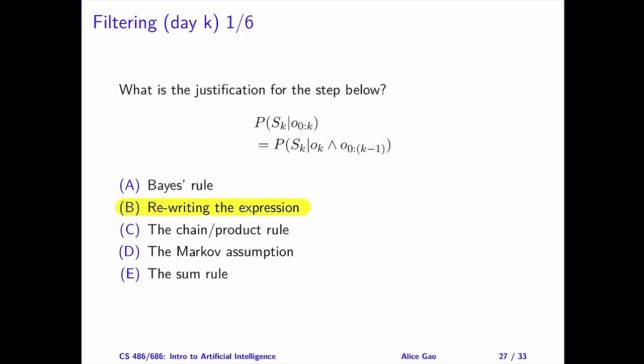The correct answer is B. We simply rewrote the expression. Recall that O sub 0 to k is a sequence of observations. This step splits up the term into two parts: one part for time k only and one part for the sequence of observations from time 0 to time k-1.